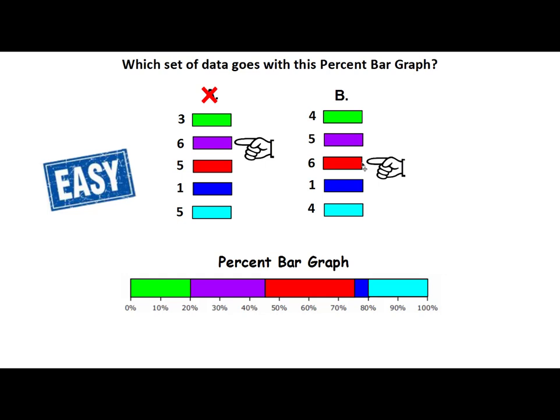6 should have had the biggest amount colored in on the percent bar graph and it does. And also notice that you can notice that the green and the teal color are equal. Well, if you look at this, they are equal. You can do it either by looking at it or counting it. 10, 20% and 10 and 20%. So I can tell that that is the correct answer.